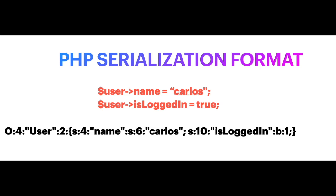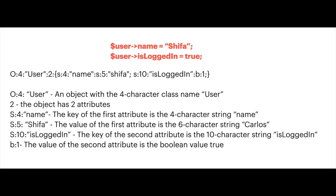When this data is serialized, it may look something like what you see on the screen. The object can be interpreted as follows: O:4 means 'user' has four characters. Then we have 2 for two attributes. S:4 is 'name' — four string characters. S:5 is 'Shifa' — the value of the first attribute. Then S:10 is 'is_logged_in' — count the spelling, it equals 10 characters. Then B:1 stands for a boolean value of true. This is how you interpret this serialized code.